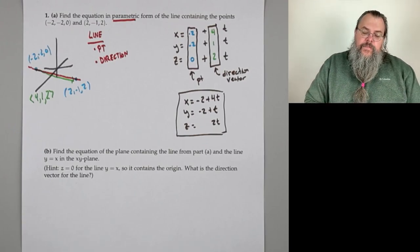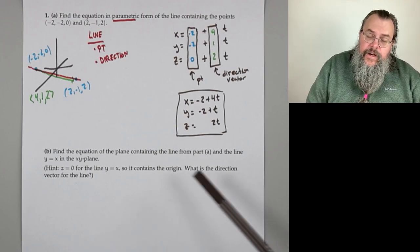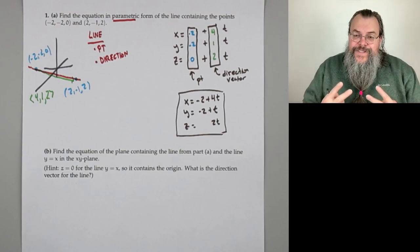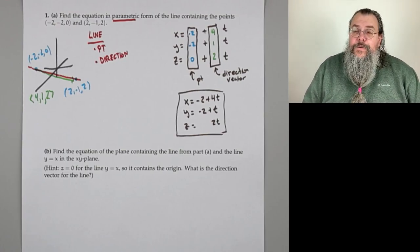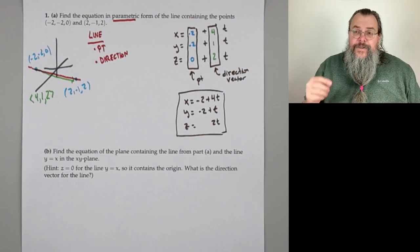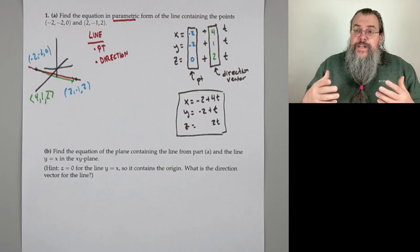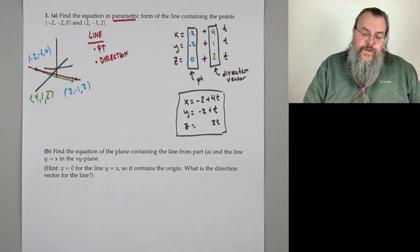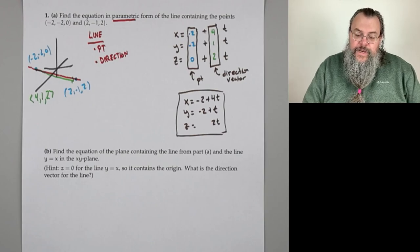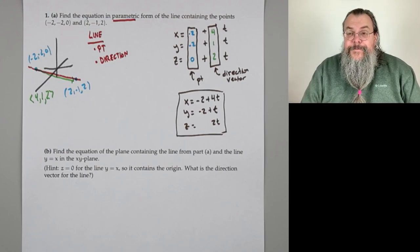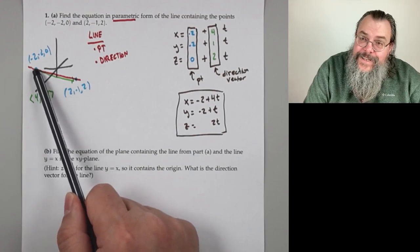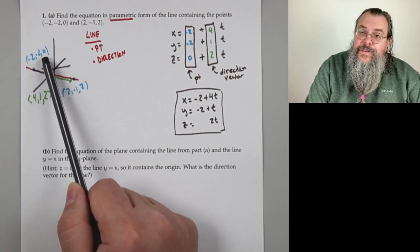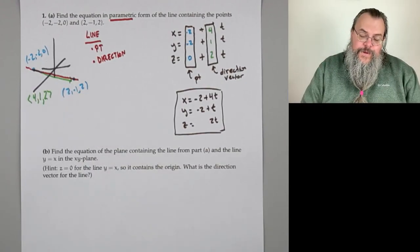Part B: find the equation of the plane containing the line from part A and the line y = x in the xy plane. It's not always the case that two arbitrary lines determine a plane — they might be at weird angles. But we know these lines intersect at (−2, −2, 0), where y = x and z = 0. Two intersecting lines always form a plane.